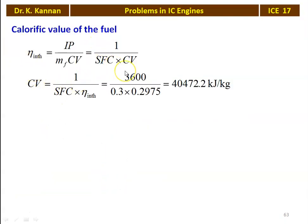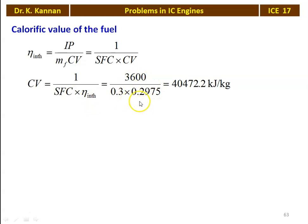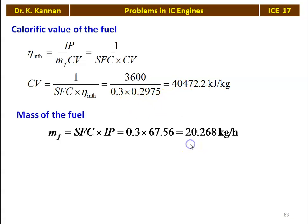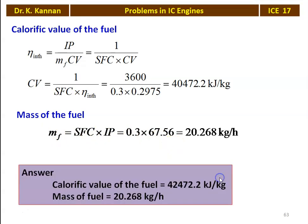The calorific value of the fuel is calculated from the definition of indicated thermal efficiency: η_I = IP / (M_F × CV), which gives CV = 1 / (SFC × η_I) = 3600 / (0.3 × 0.2975) = 40,472.2 kilojoules per kilogram. The mass of the fuel from the definition of SFC: M_F = SFC × IP = 0.3 × 67.56 = 20.268 kilograms per hour. The answers: calorific value of the fuel is 40,472.2 kilojoules per kilogram and mass of the fuel is 20.268 kilograms per hour.